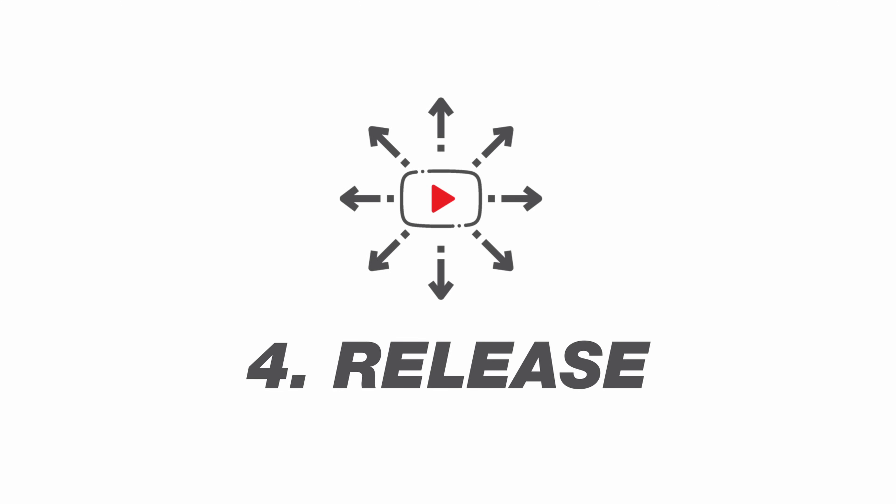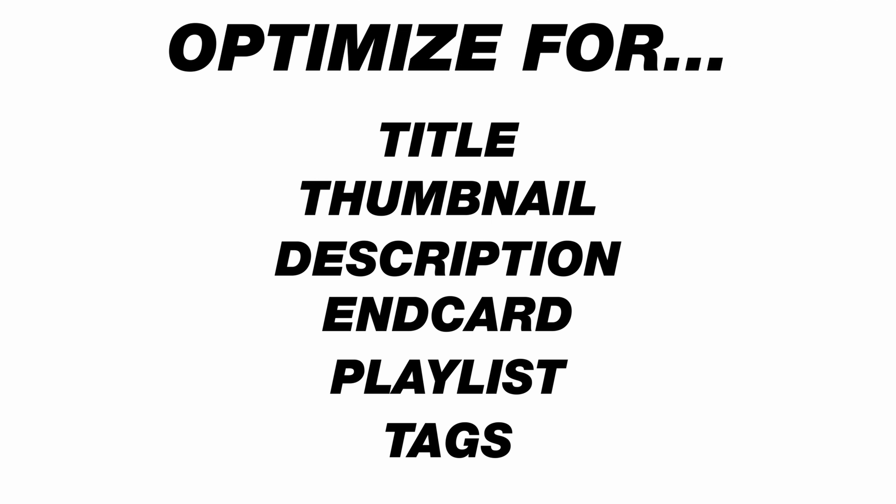Then you release your video — step four — the right way. That's going to be optimization: title, thumbnail, description, end card, playlist, tags. If YouTube gives me the opportunity to fill out data — metadata — I want to use it. How is YouTube going to know what your video is about if you don't support it with metadata, the searchable terms? Even more importantly is what you say in your video, because YouTube is transcribing what you're saying. The most important things are the title, the thumbnail, and the topic itself.